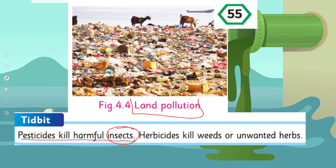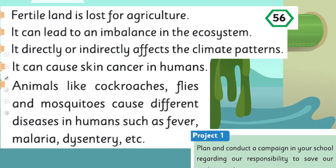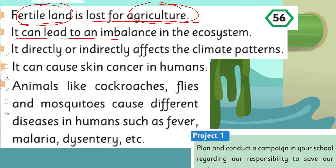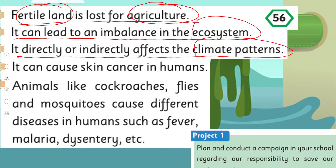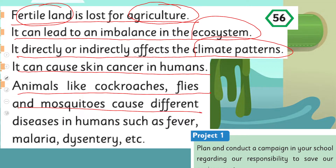Pesticides jo ke spray ki jati hain wo harmful insects ko kill karti hain. Fertile land is lost for agriculture — jab zyada se zyada pesticides, herbicides, aur fertilizers use karte hain to fertile land kam ho jata hai. It can lead to an imbalance in the ecosystem, and it directly or indirectly affects the climate. It can cause skin cancer in humans. Animals like cockroaches, flies, and mosquitoes cause different diseases such as fever, malaria, and dysentery.